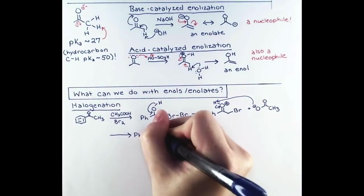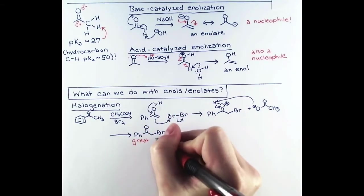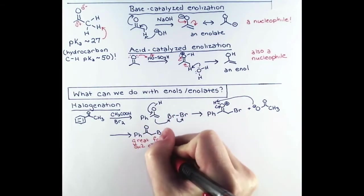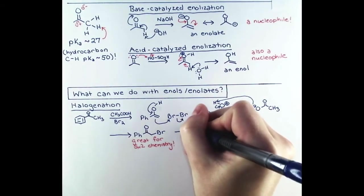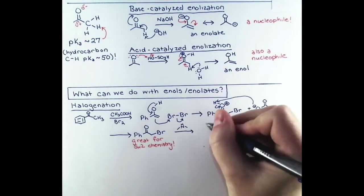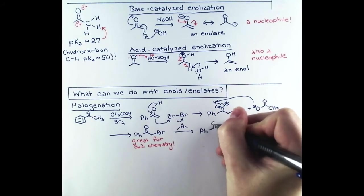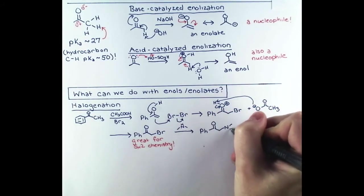So why are these alpha halogenated carbonyl compounds useful? Well, they're great substrates for SN2 reactions, and we can displace the bromine with a variety of nucleophiles. Here I'm showing a reaction with dimethylamine, to make an alpha amino compound.